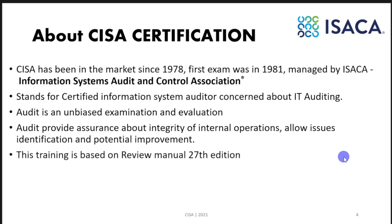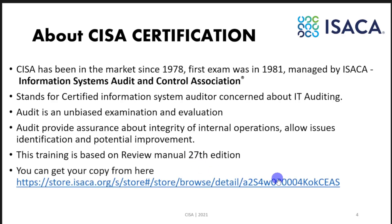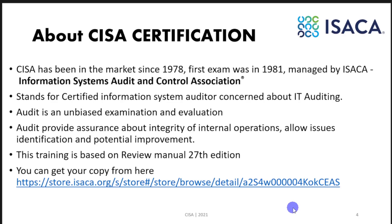This training will be based on the review manual version 27. The review manual is the official book for the CISA certification, published by ISACA. The version we are discussing is version 27, released in 2019. You can get your copy from the ISACA web store — it is a paid resource — or purchase a hard copy on Amazon.